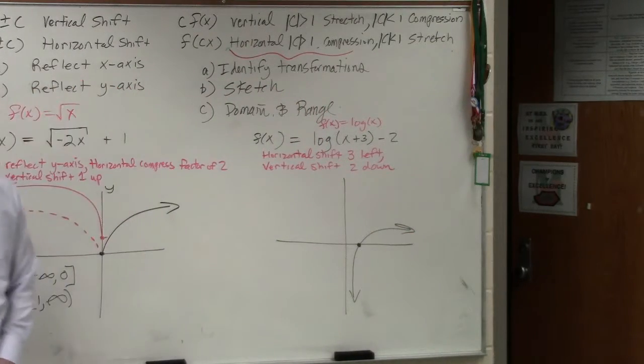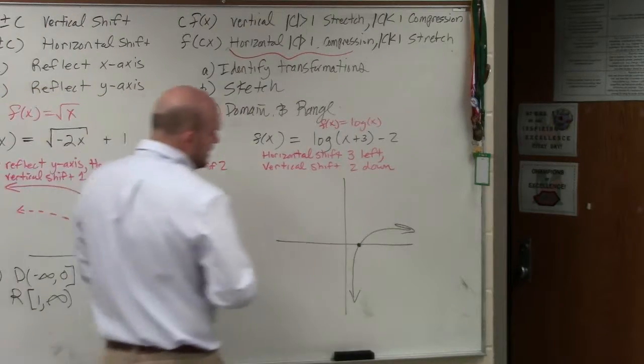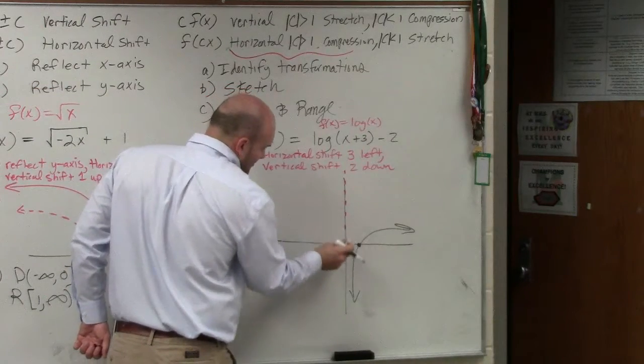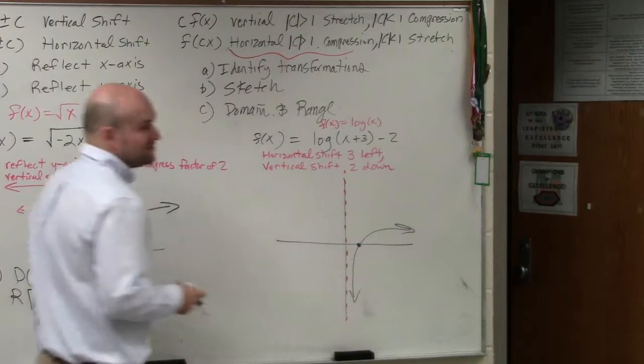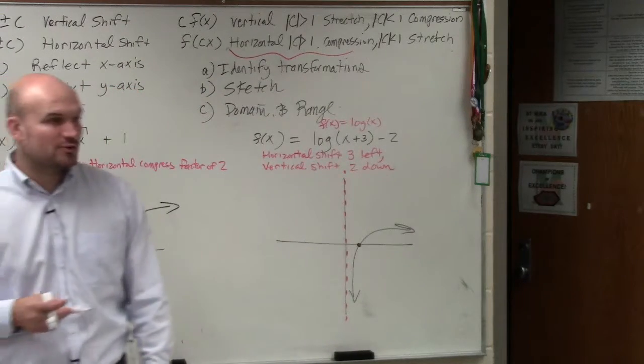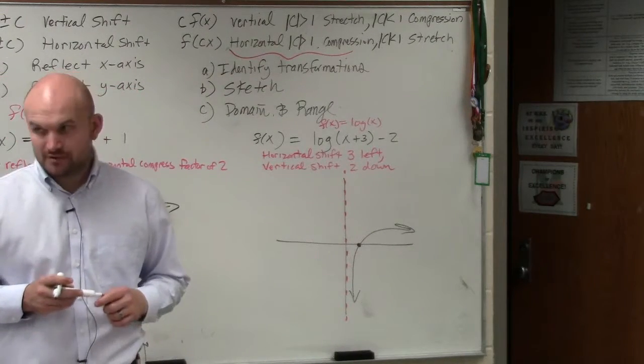It has an x-intercept at 1, 0, and also has an asymptote at x equals 0. That's really, really important for us to remember.